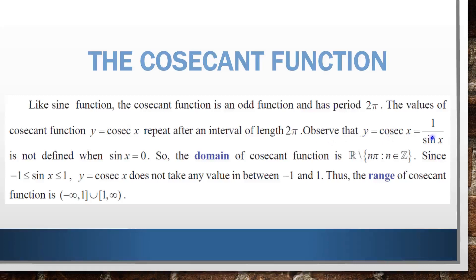Observe that y = cosecant x = 1/sin x is not defined when sin x = 0. That is, cosecant x = 1/sin x, so when sin x = 0, cosecant x tends to infinity. So the domain of the cosecant function is ℝ except the set of all nπ such that n belongs to ℤ. Since sin x equals zero at multiples of nπ, those values are excluded. Except those values, all real numbers form the domain of the cosecant function.